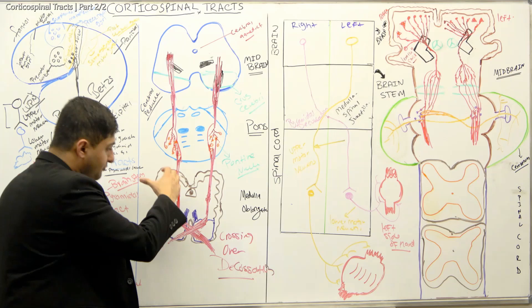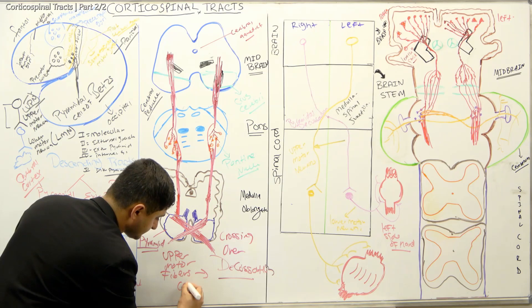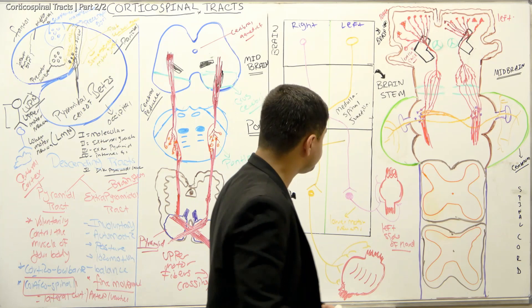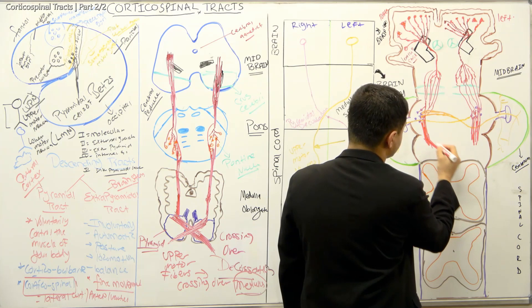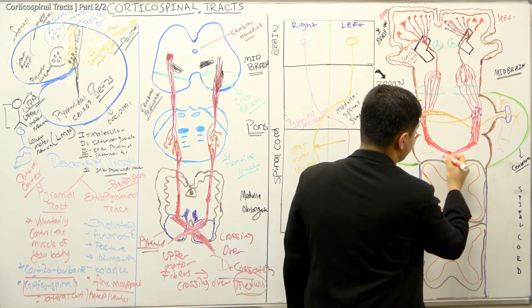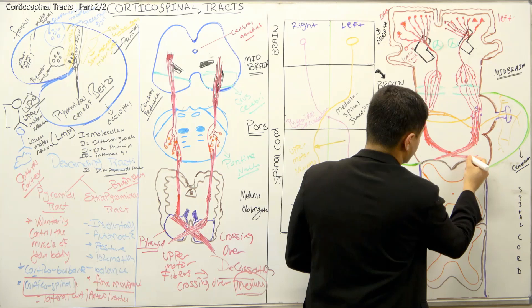The corticospinal tract is what is known as your upper motor tract. The crossover of the upper motor fibers happens right in the medulla region — this is a very important concept. The fibers come down to the medulla area and they cross over obliquely, like this.